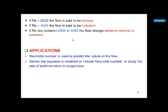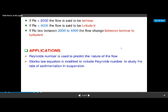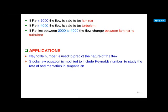If the Reynolds number is low, the viscous force will be higher — they are inversely proportional. Reynolds number is important for determination of heat transfer by forced convection, frictional losses in fluid flow, and many more applications. Reynolds number is used to predict the nature of the flow — whether it is laminar or turbulent. Also, Stokes' law equation is modified to include Reynolds number to study the rate of sedimentation in suspension.